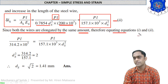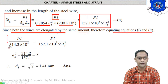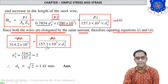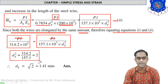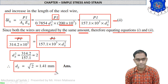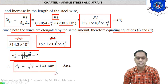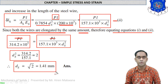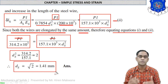Since both wires are elongated by the same amount, equate equation 1 and equation 2. PL cancels from both sides. Making d_s² the subject gives d_s² = 2. Taking the square root, d_s = √2 = 1.41 mm. So the diameter of the copper wire is 2 mm while the diameter of the steel wire is 1.41 mm.